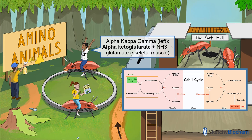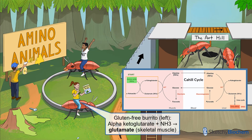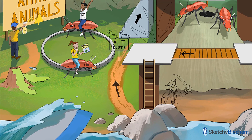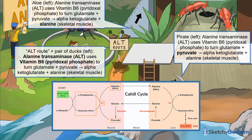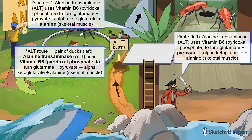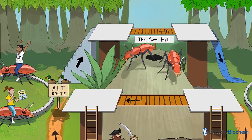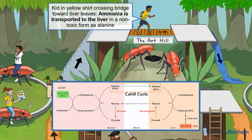See the alpha-kappa-gamma frat boy on the kiddie ride? He's alpha-ketoglutarate. And do you see the girl glued to her seat eating a gluten-free burrito? She's glutamate, and since she's wearing a yellow shirt, you know she's now holding the ammonia. Next, muscle alanine transaminase, or ALT, transfers an amino group from glutamate to pyruvate, producing alanine and alpha-ketoglutarate. ALT is not only present in skeletal muscle but also in the liver, as you'll see shortly. ALT requires vitamin B6, also known as pyridoxal phosphate.